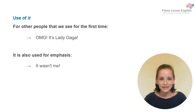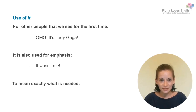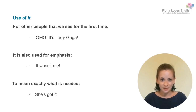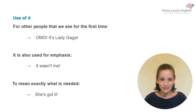And also, 'it' is used informally to mean exactly what is needed. So in the sentence 'She's got it,' it means exactly what's needed for something. For example, if somebody is in a talent show and somebody says 'She's got it' about a person performing, 'it' would mean exactly what is needed — and in that moment, that would be talent.